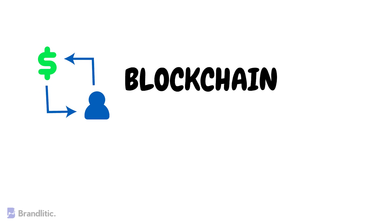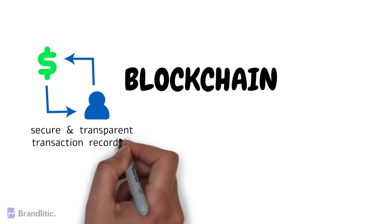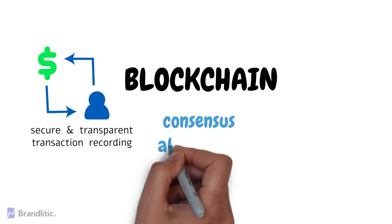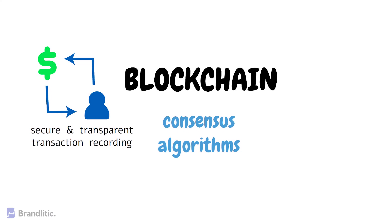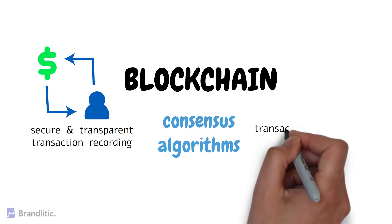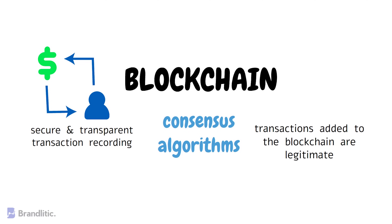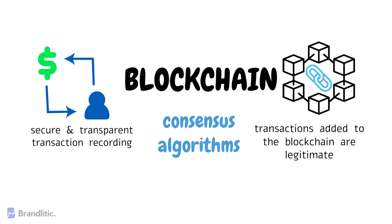Blockchain technology has become a popular means of distributed ledger systems that allow for secure and transparent transaction recording. To ensure the integrity of these transactions, blockchain networks rely on something called a consensus algorithm, whose job is to ensure that transactions added to the blockchain are legitimate and that the network remains secure.